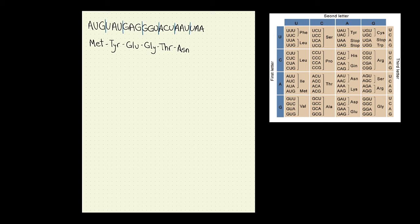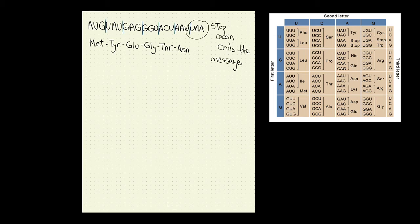One thing we should notice: in addition to a stop codon — in our case UAA — there's also a start codon. The start codon is AUG. This message starts with AUG, which indicates to the ribosome where translation of a messenger RNA to a protein begins. In this example I started my message with a start codon, but that won't always be the case.